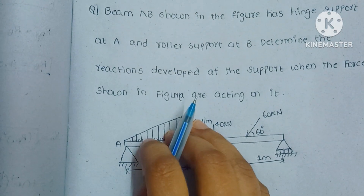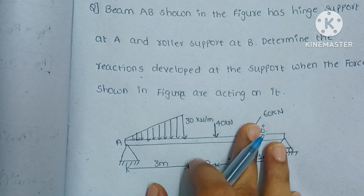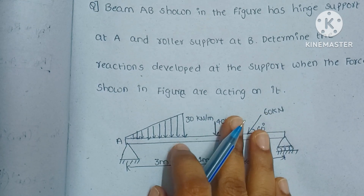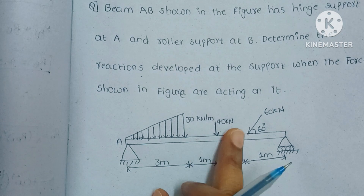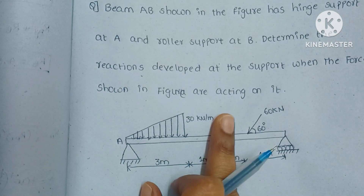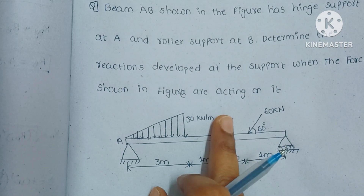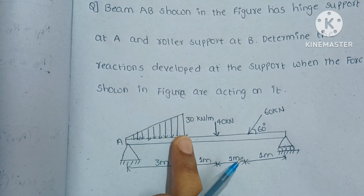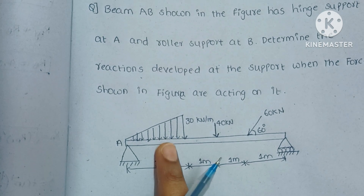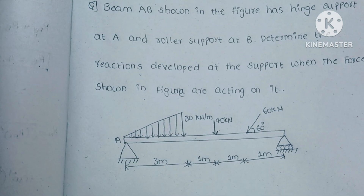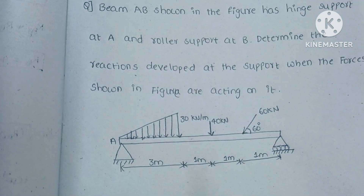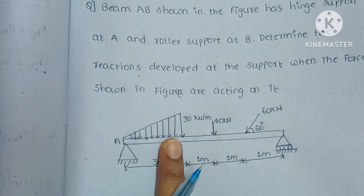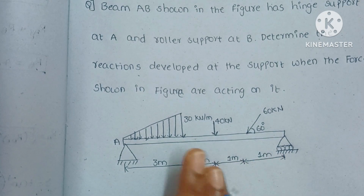Hi friends, welcome to my channel. Today we are going to see one more problem. In the previous class we saw types of beams which have a point load, uniformly distributed load, and moment on the beam. Now we are going to see uniformly varying load today, and in the next class we will discuss trapezoidal distributed load.